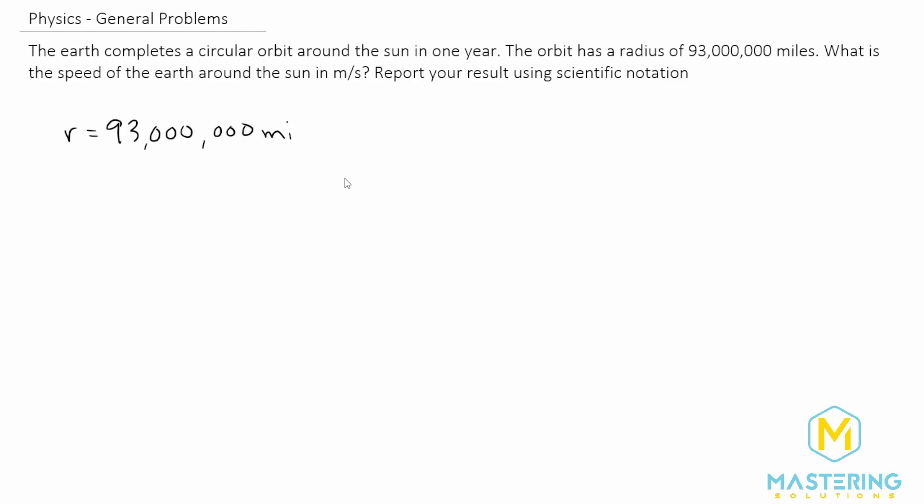Let's put that into scientific notation. It's a little bit easier to work with. So we'll have one, two, three, four, five, six, seven. So in scientific notation, it will be 9.3 times 10 to the seven miles.